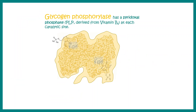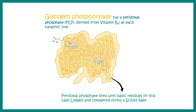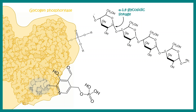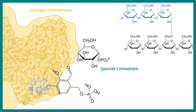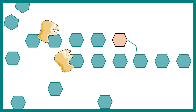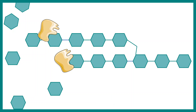Glycogen phosphorylase has pyridoxal phosphate as a coenzyme, and specific residues form a Schiff base with the lysine-680 amino acid, which is crucial for its functionality. The alpha-1,4 glycosidic linkage mounts a nucleophilic attack on the phosphate group in glycogen phosphorylase, breaking the linkage and forming a transient linkage with the enzyme; later glucose-1-phosphate is freed up. Notably, glycogen phosphorylase halts when it is four residues away from a branch point.